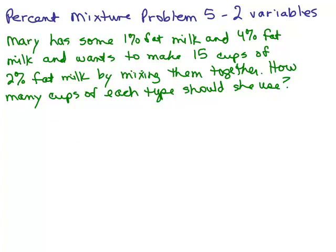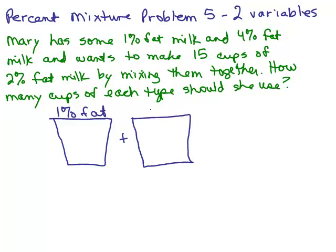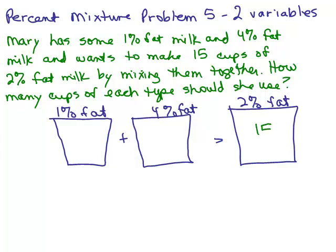Let's look at a picture of this. She's got some 1% fat milk and she's mixing it with this 4% fat milk in a big vat and she's going to end up with some 2% fat milk. And what I know is she wants to end up with a total of 15 cups. So these two, whatever's in here, like if I have 3 cups and 12 cups that would add to 15 cups. So I don't know what these are but I could use two variables.